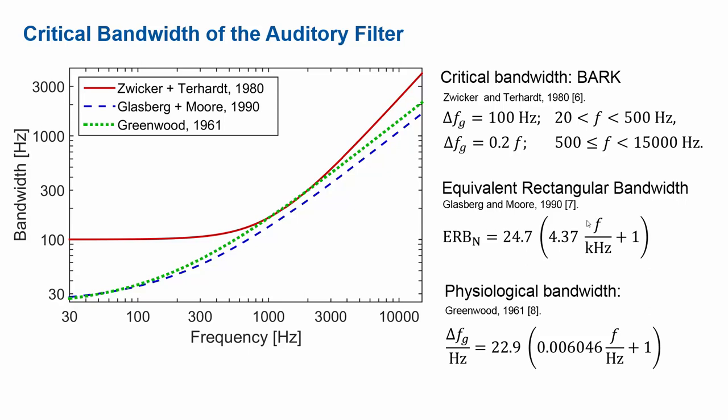The general idea for ERB is that at high frequencies bandwidth is constantly proportional to frequency, because the added constant will not have much of an impact. Greenwood postulated the critical bandwidth from physiological measurements, again with a constant added to a frequency-dependent term. The Greenwood curve is plotted in green and is pretty close to Zwicker's bandwidth in the mid-frequency range, but narrower at low frequencies and narrower at high frequencies.